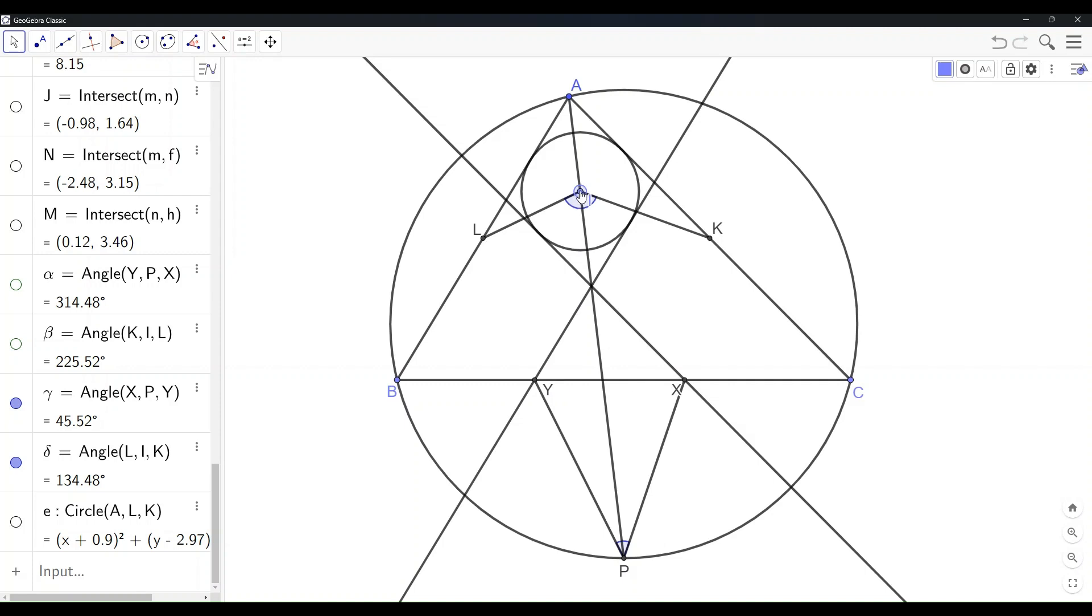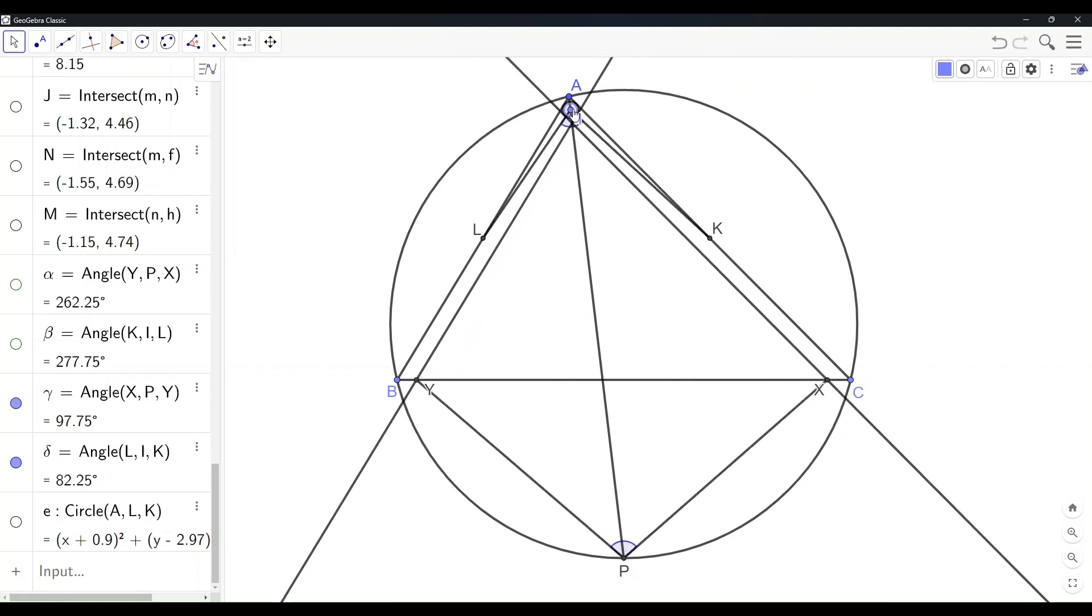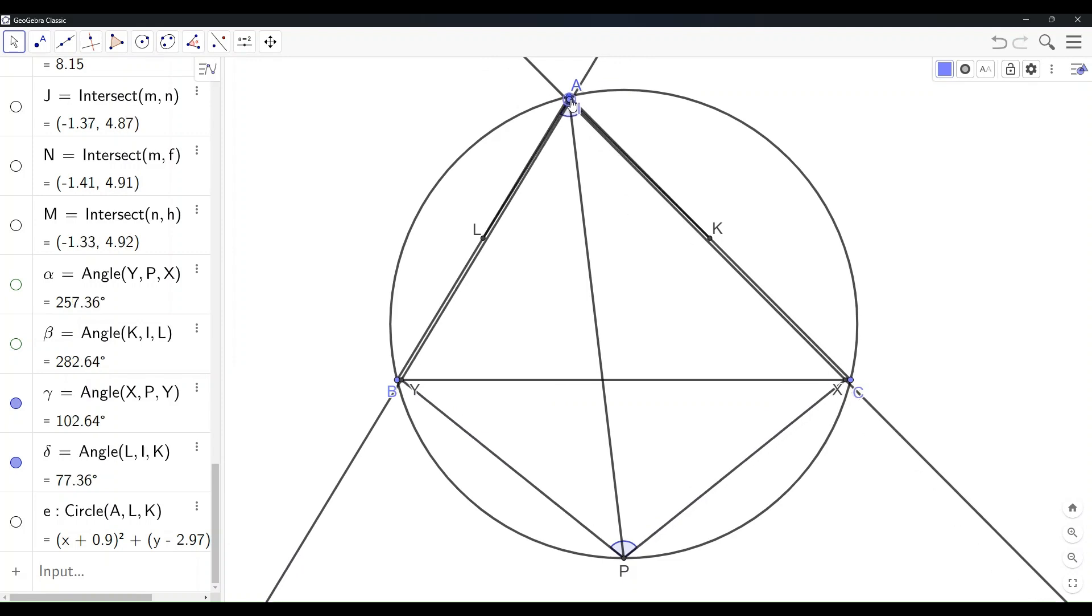One more special case is when I is approaching point A. The graph degenerates into a cyclic quadrilateral where the sum of two opposite angles is about 180 degrees.